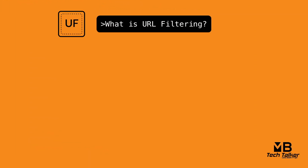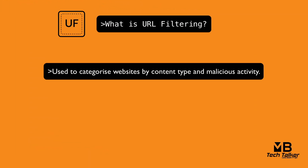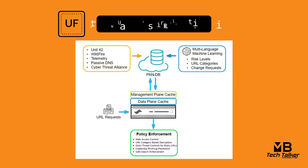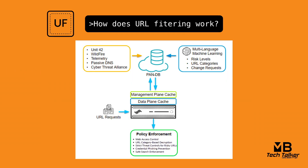For those of you who don't know what URL filtering is, it's used to categorize websites by content type and malicious activity. When URL filtering is enabled, all web traffic is checked against Palo Alto Network's URL filtering database called PanDB. PanDB contains millions of categorized websites. These URL categories can be used as match criteria in your security policies, and more importantly, prevents users from browsing malicious URLs, exploited web pages, and watering holes where legitimate sites become compromised. Using URL filtering and App-ID together is an invaluable tool for securing web traffic.